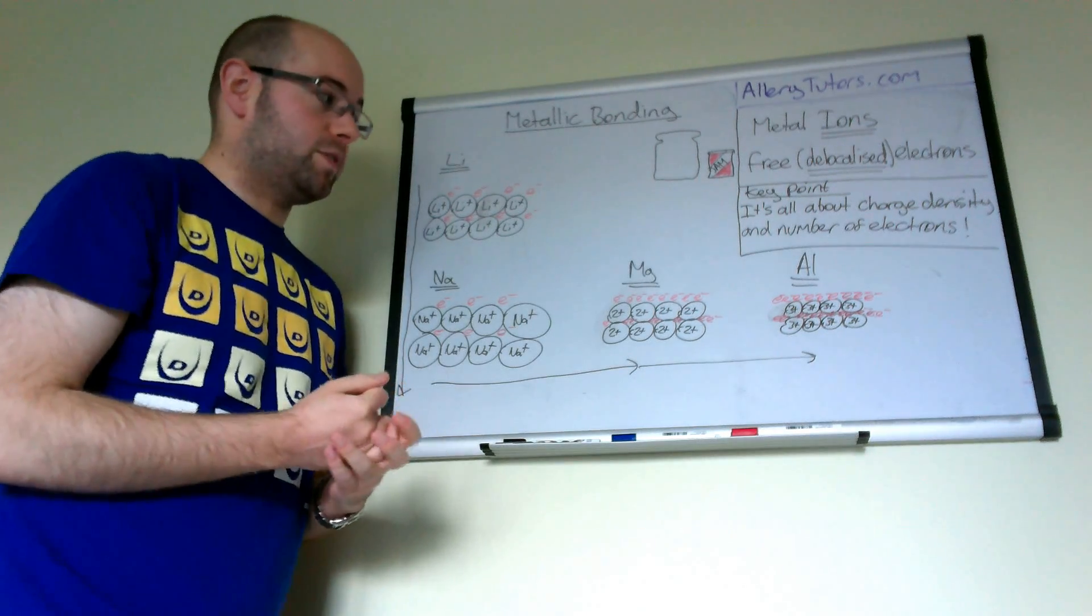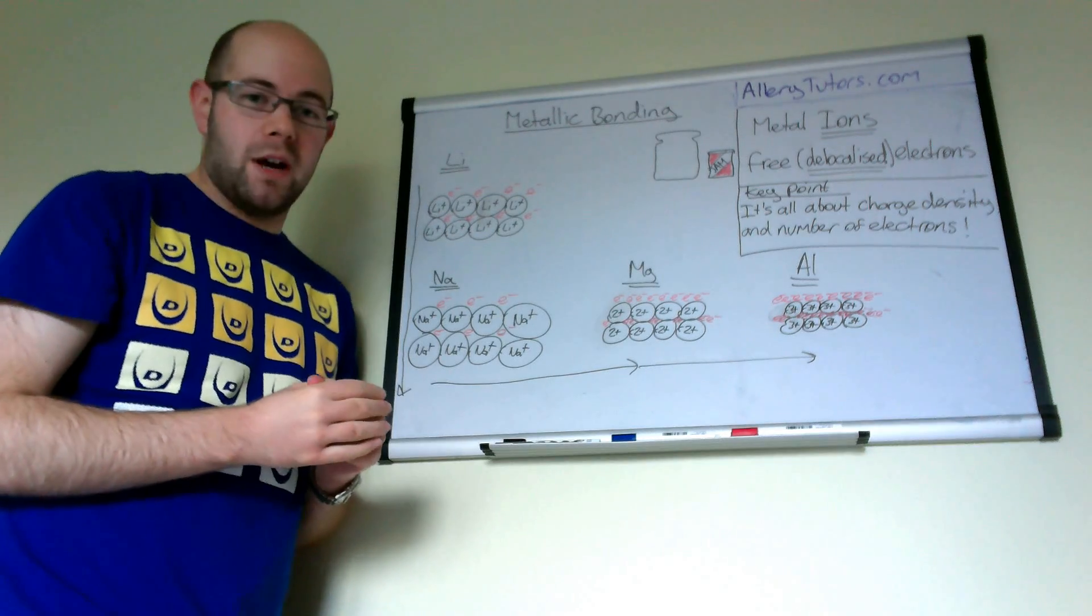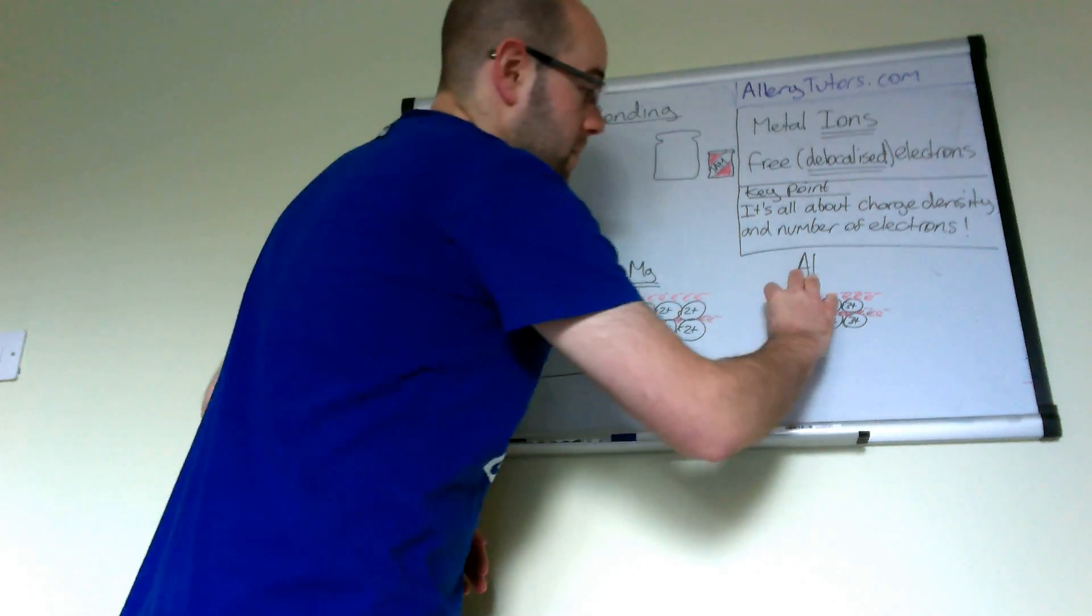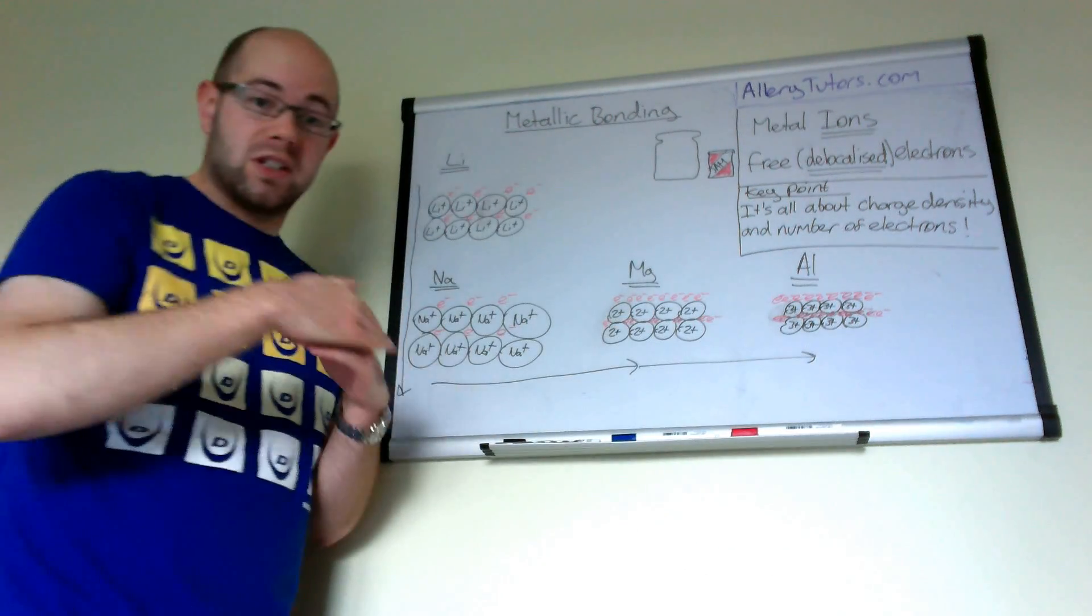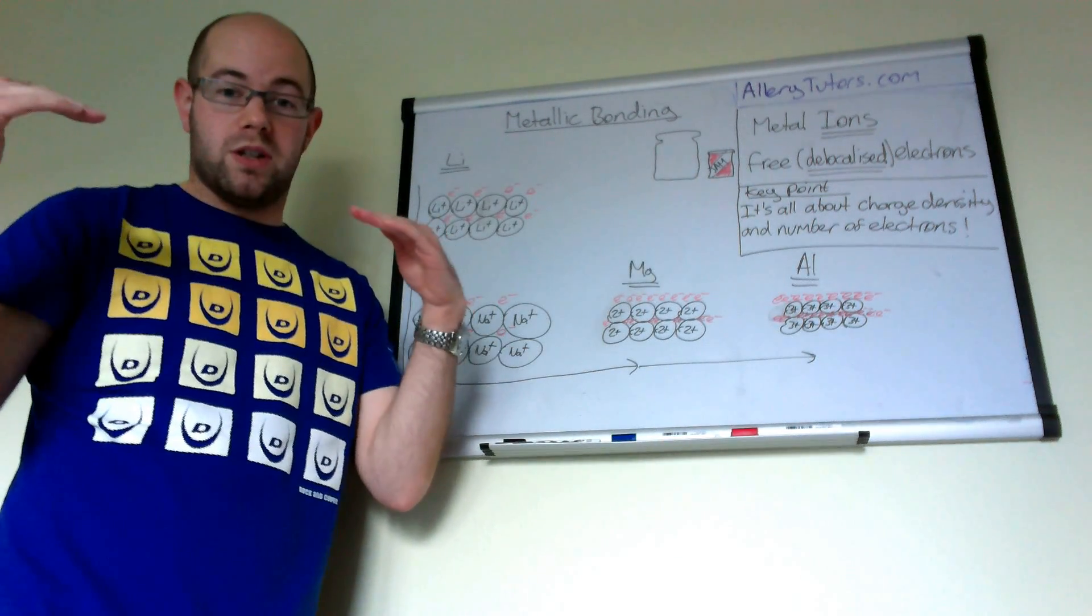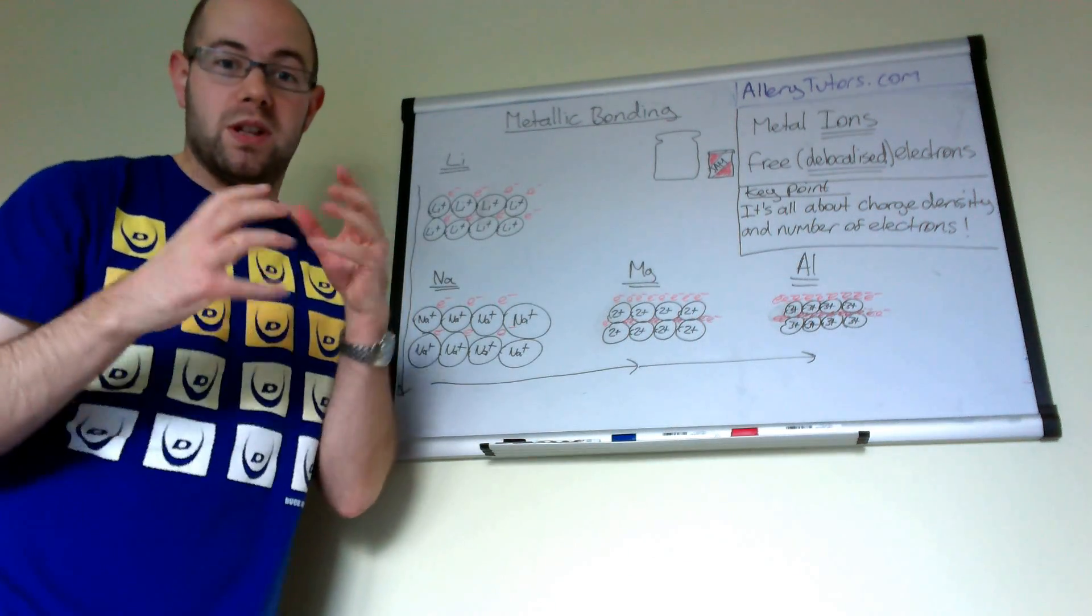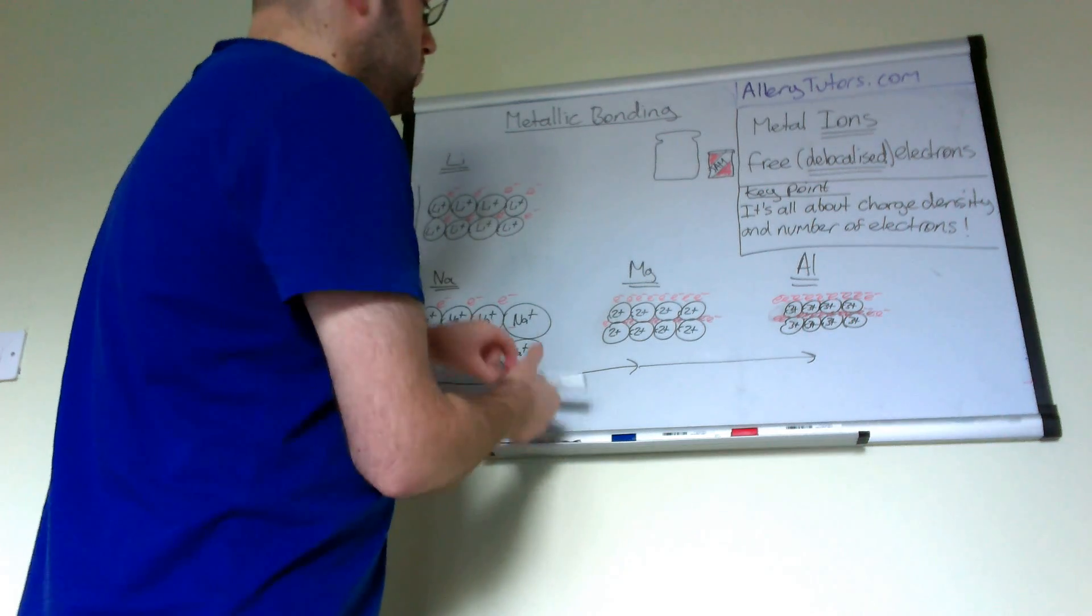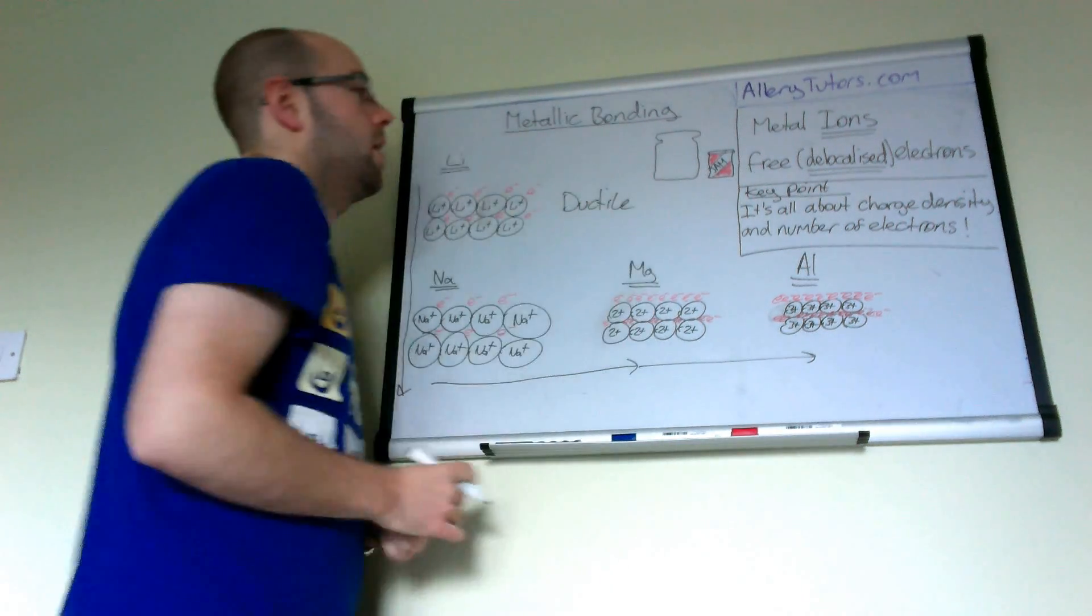Most metals, but not all, are classed as ductile. Ductile means they can be drawn out into cables. The reason why is because these layers of different ions can slide quite readily. Because they can slide readily, they can be drawn into a ductile formation but still keep that attraction between the electrons and the positive charges. You've got to remember about the ductile properties of metallic bonding.